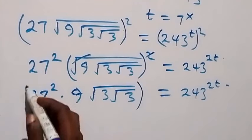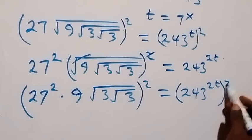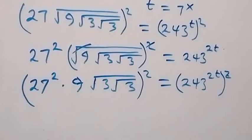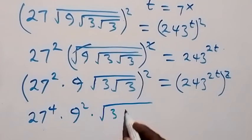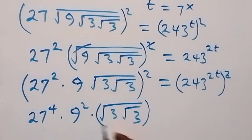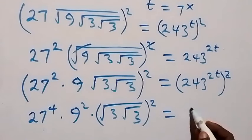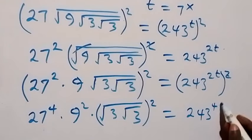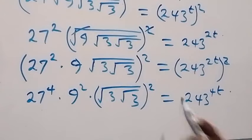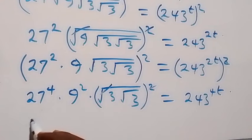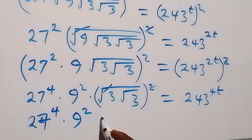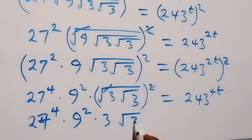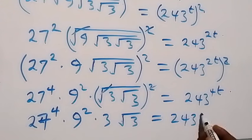Next step: let's square both sides again. The square affects 27 squared — that's 2 times 3, giving 27 raised to power 4 — then times 9 squared, then times square root of 3, plus 3. We also square the right side, and the power multiplies, giving us 243 raised to power 4t. The square cancels the square root, and what we have becomes 27 raised to power 4 times 9 squared, then times 3, then times root 3, equals 243 raised to power 4t.